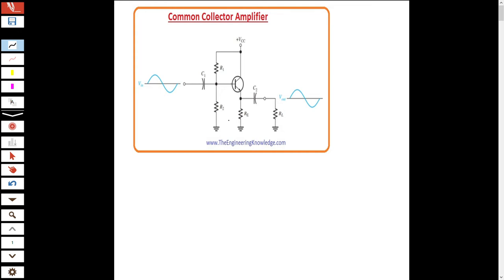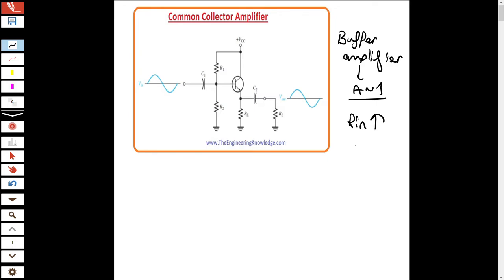In this video I will talk about the common collector amplifier, also called the buffer amplifier. We call it a buffer amplifier because the gain is approximately one — it does not change the gain. We use it because our input impedance is high and our output impedance is low, which is what we want from a buffer stage.